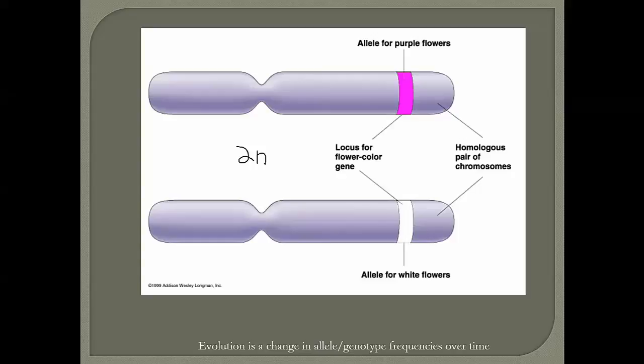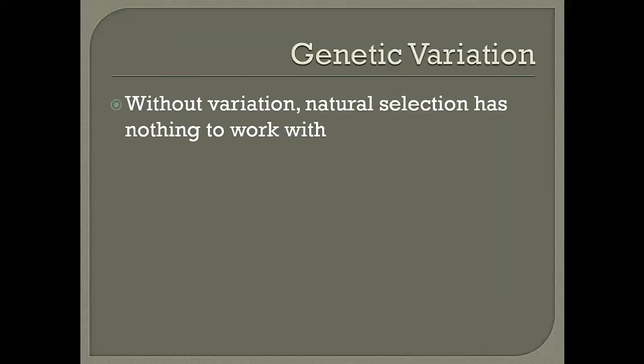In the case of Mendel's flowers, he had flowers with alleles for different flower colors. Same gene — flower color — found at the same locus, but that gene could be for purple or white flowers. An organism with both alleles would be heterozygous for flower color. This genetic variation is absolutely vital for evolution; without that raw material, evolution can't happen.